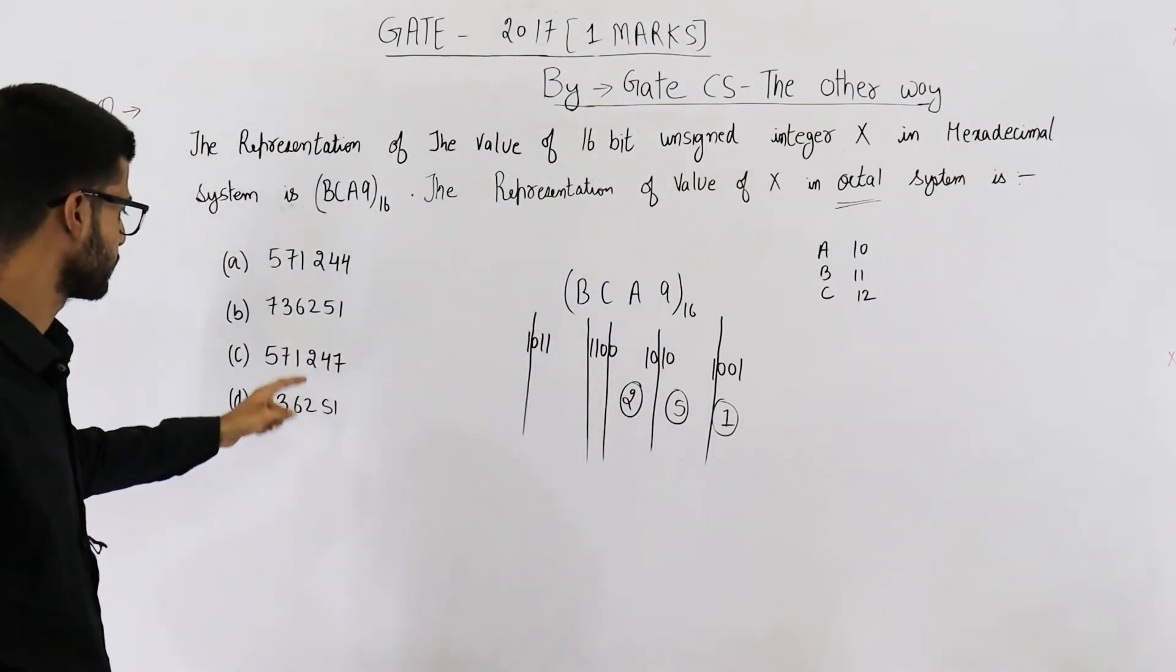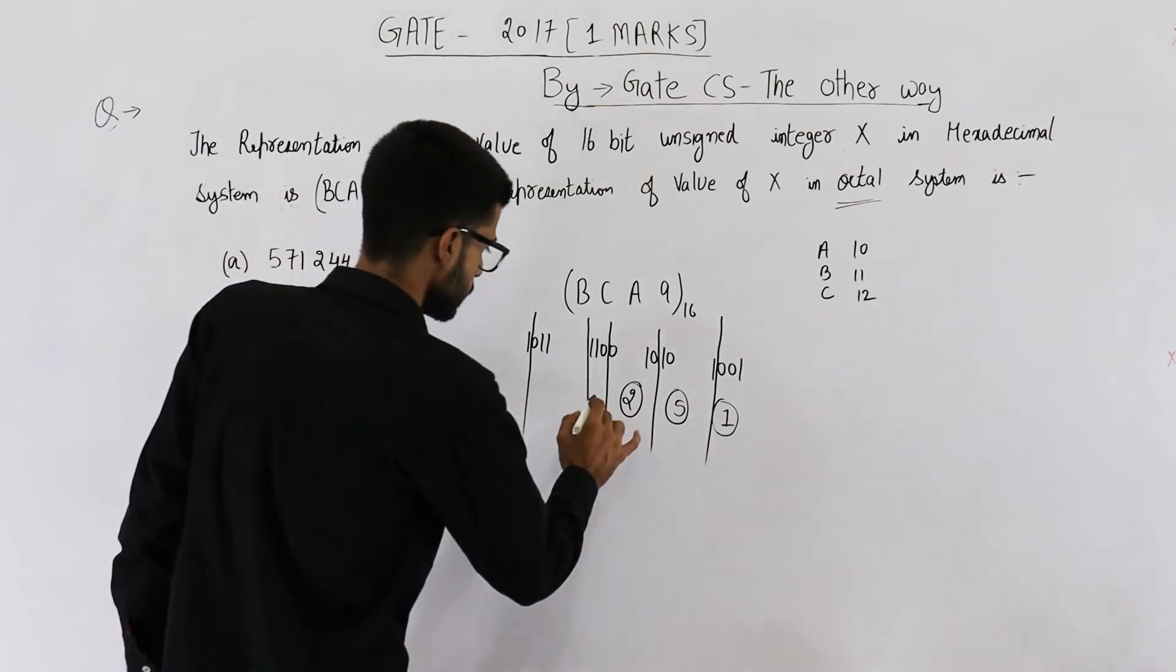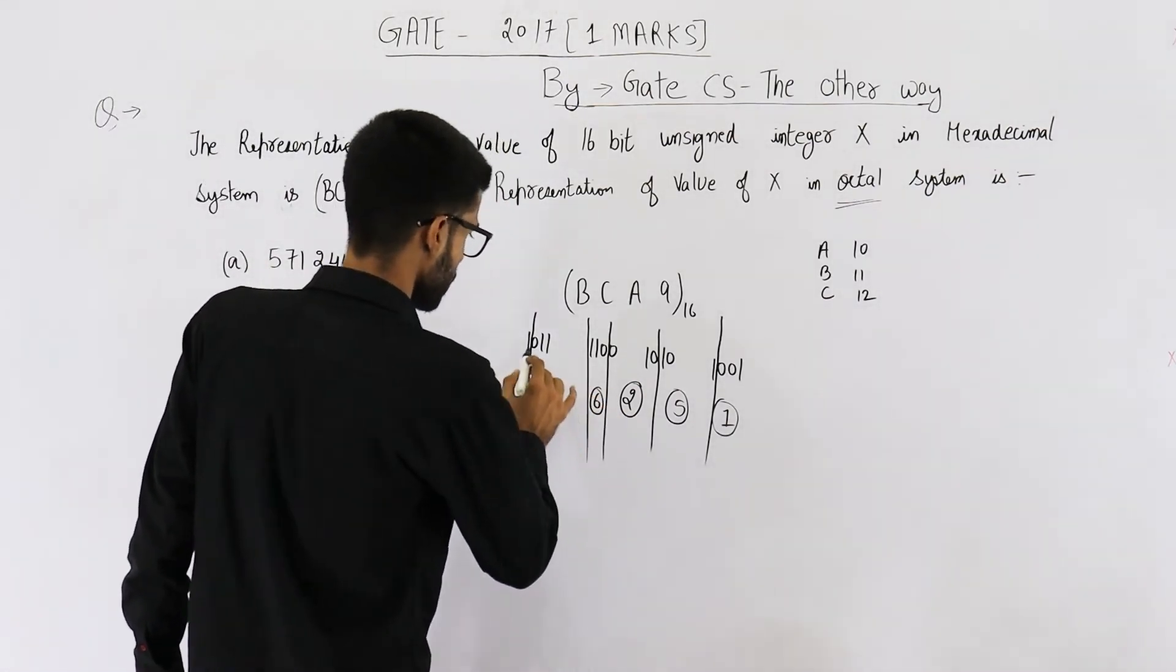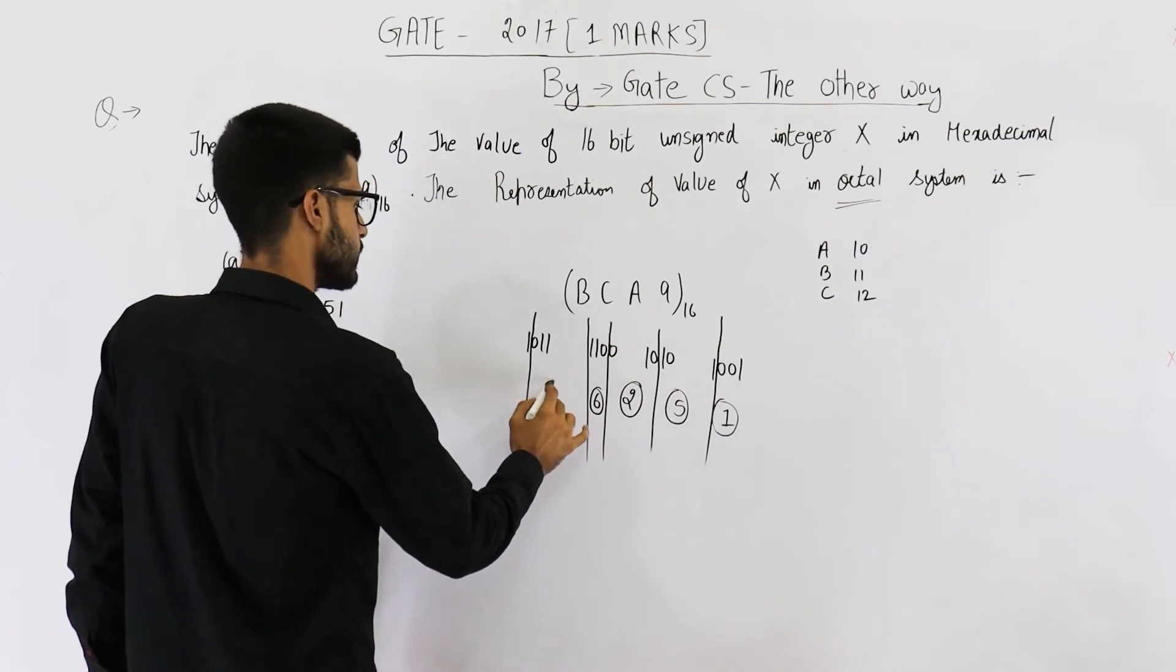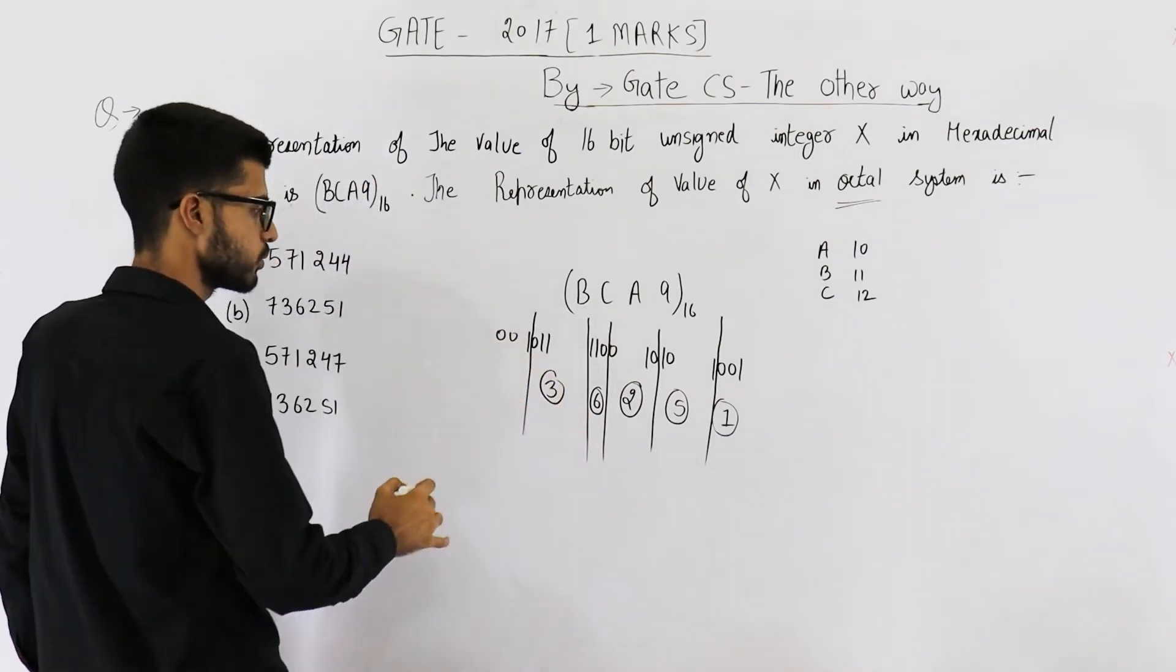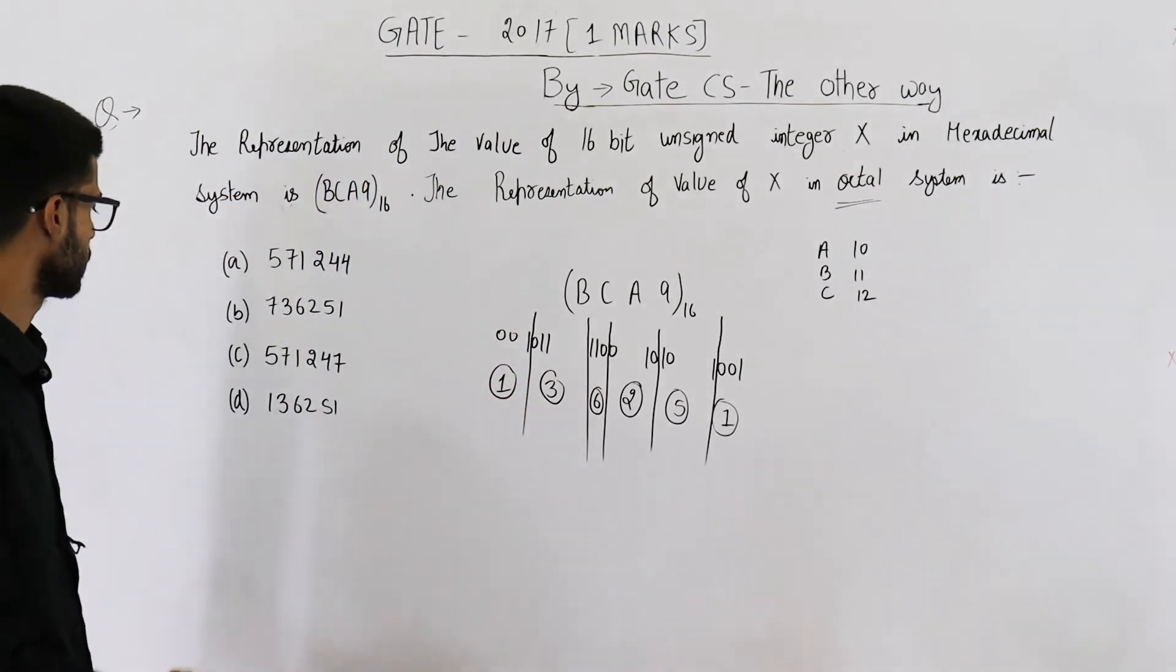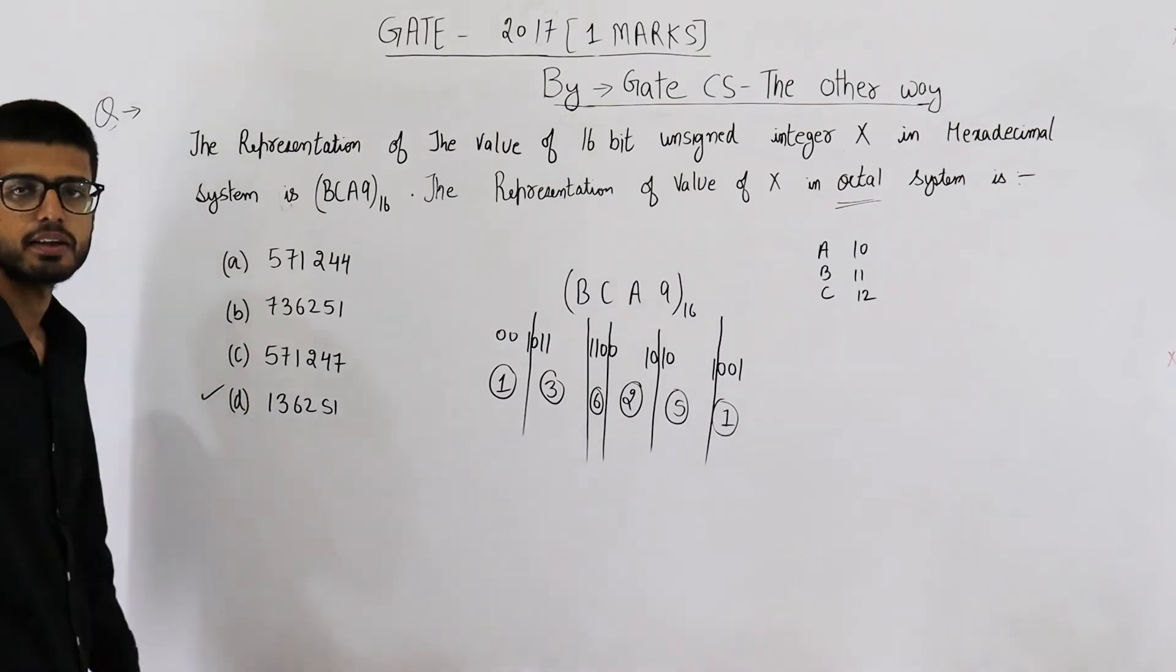Again both of the numbers are ending with 251. 6 is also same. So this one will be 6. 0 1 1 means 3, and 0 0, I am adding these two zeros, 0 0 1 means 1. So it is 1 3 6 2 5 1. Option D is correct here.